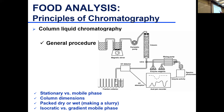So if my stationary phase is polar and my mobile phase is non-polar, and I have polar compounds stuck in the column, I introduce water to the non-polar mobile phase. Now my polar compounds will prefer the more polar mobile phase and move out faster.